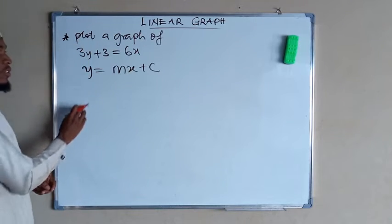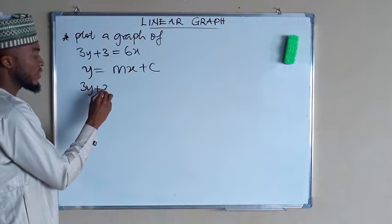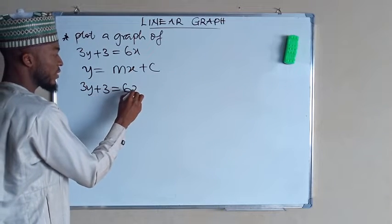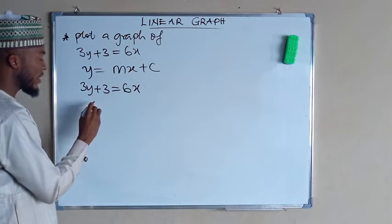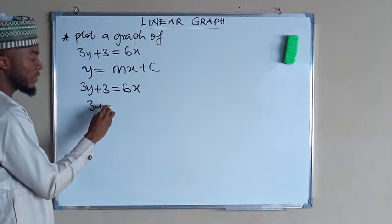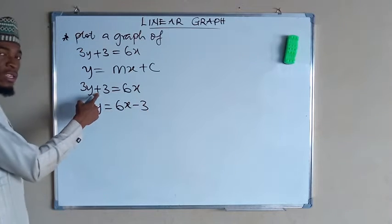So we need to transform this equation into this form. 3y plus 3 equals 6x. We need to take this constant term to the right-hand side, so we have 3y equal to 6x minus 3, because initially it was positive.